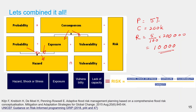In UNICEF's GRIP document, hazard is broken down into two terms: hazard shock or stress, and its exposure separately. By doing this, GRIP explicitly separates the hazard event and the exposure of social or ecological systems, for example vulnerable communities. We also break down vulnerability explicitly into the system's vulnerability and its capacity to deal with it. We can either have lack of capacity in the numerator or capacity in the denominator — both mean the same thing.